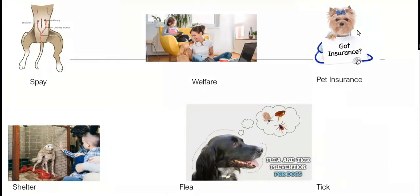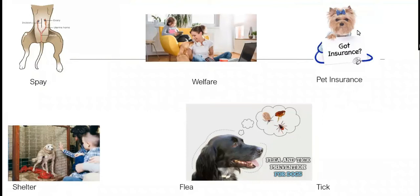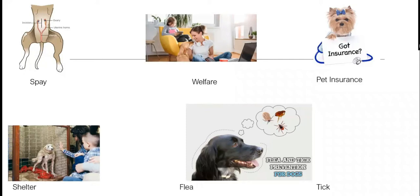Then we have 'spay.' Spay is when you get a dog or a cat and you do not want them to have any puppies or kittens — you take them to the vet to get surgery so they will not be able to reproduce. It's a surgery where they remove the ovaries or the reproductive system, so they cannot have puppies or kittens.